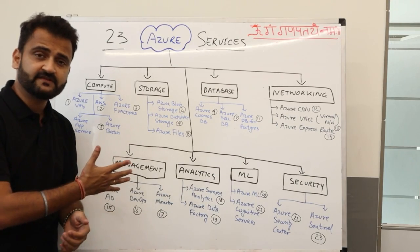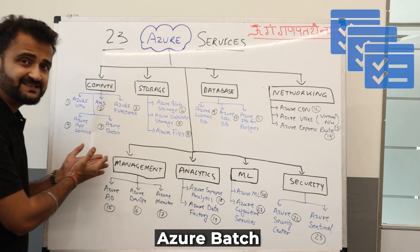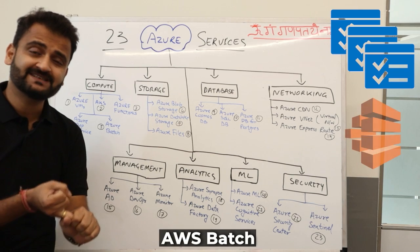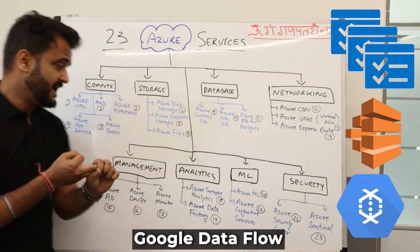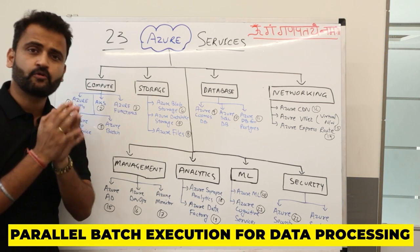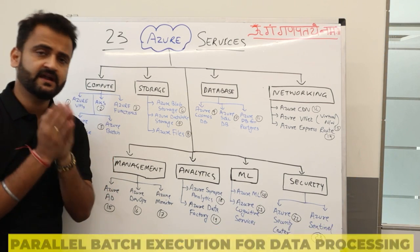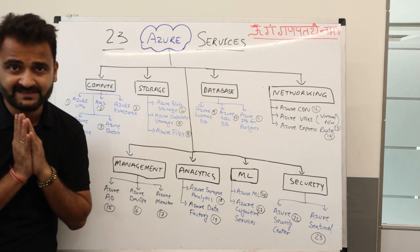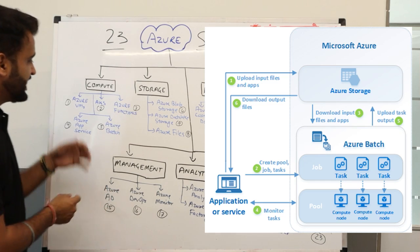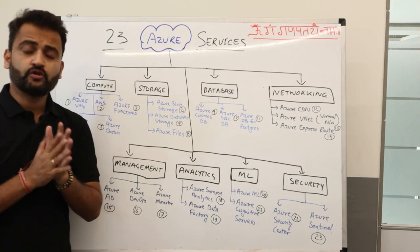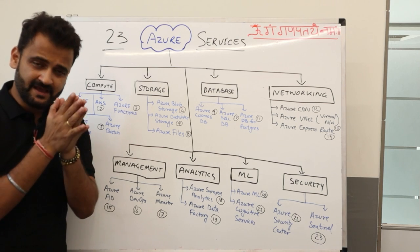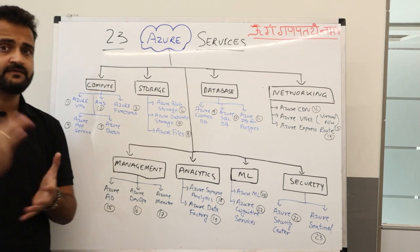The fifth service under compute is Azure Batch. In AWS we have AWS Batch, and in Google we have Google Dataflow. Azure Batch is used to run parallel batch execution jobs for processing data. If you have a large amount of data to process in batches — rendering images or doing heavy parallel data processing — Azure Batch is the service to use.